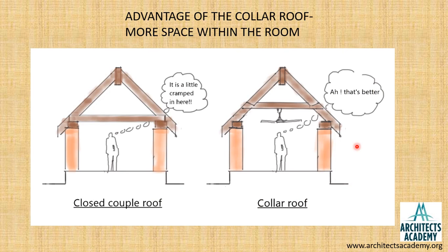This shows why the collar roof has an advantage over the closed couple roof. In the closed couple roof the space below the roof had considerably reduced, while in the collar roof, because the collar has been raised up, you can get much more space below the roof.